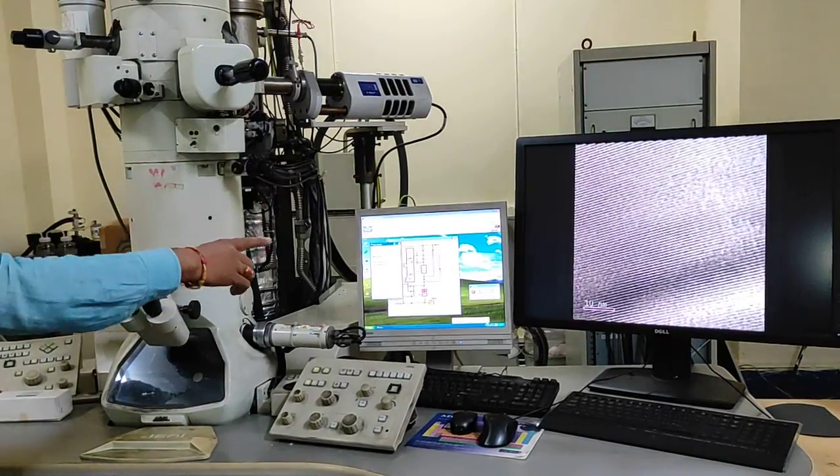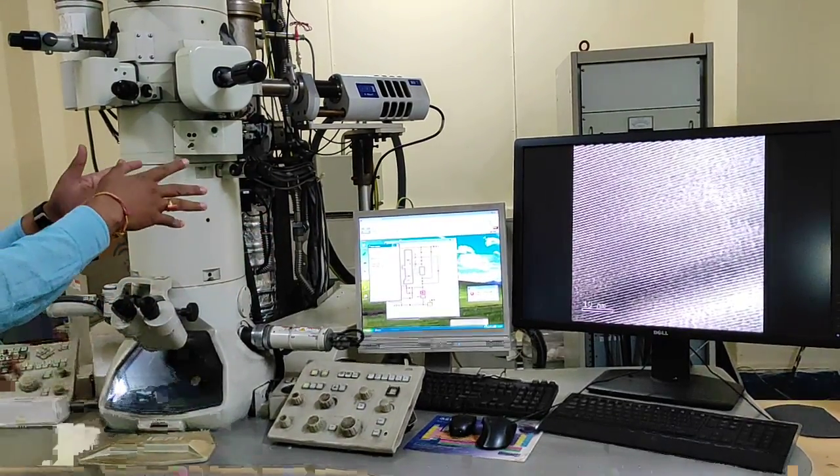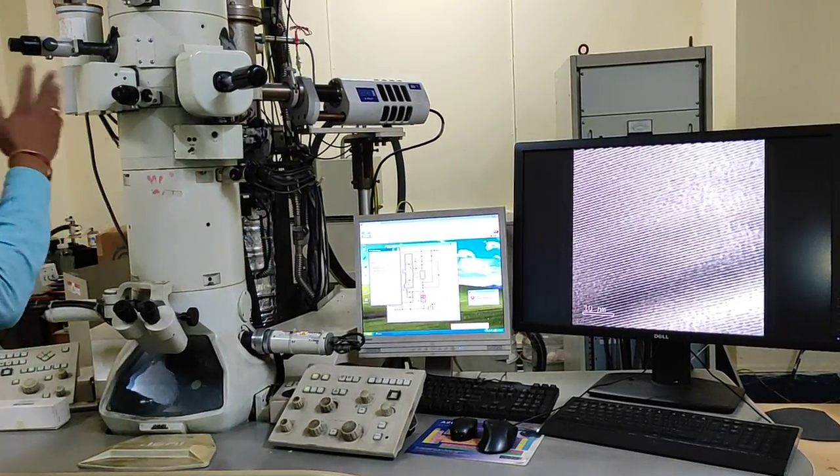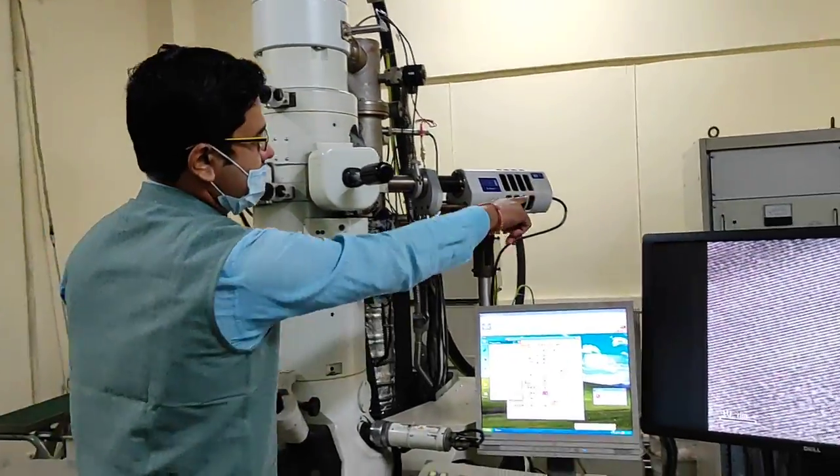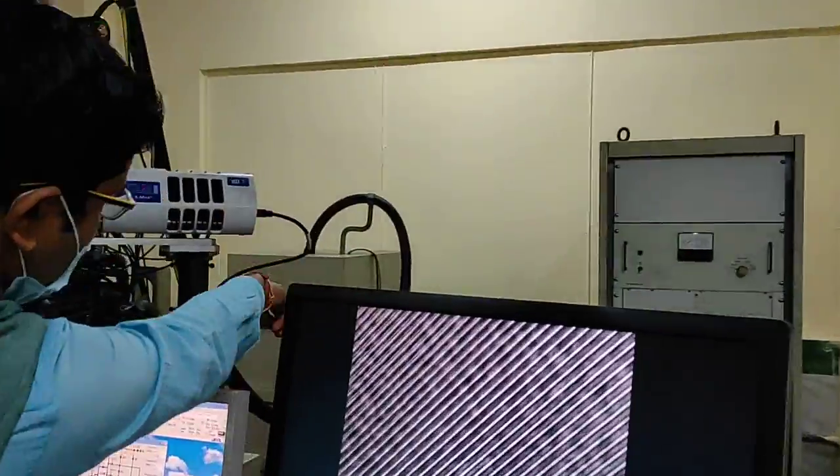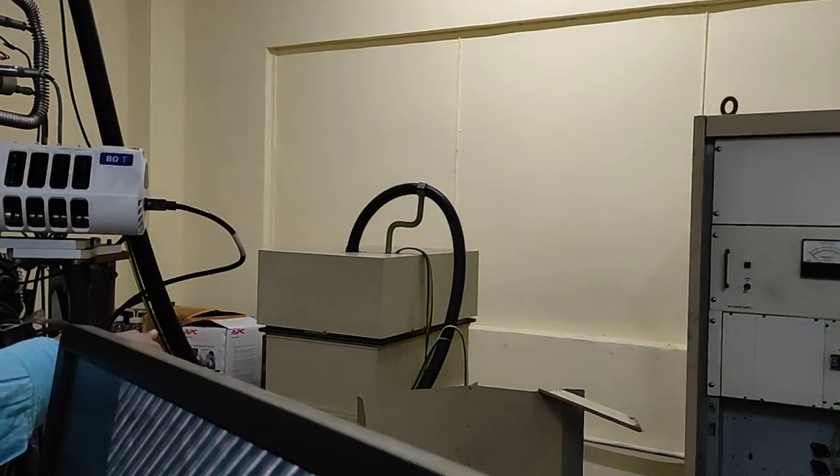This is the server unit through which all the software is installed and we are controlling the entire microscope. Other than this main console, this is the electrical cabinet and this is the high tension generation unit where 200 kilovolts is